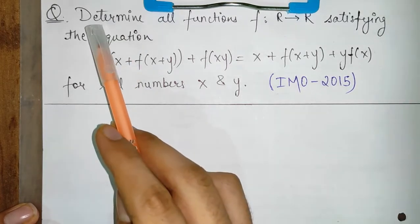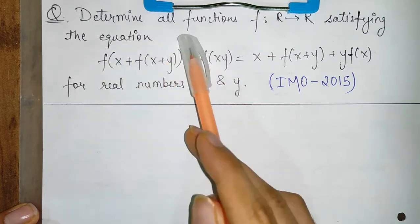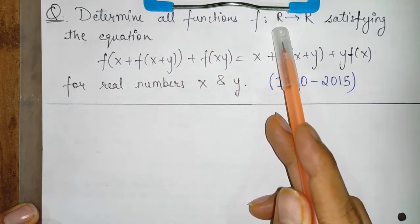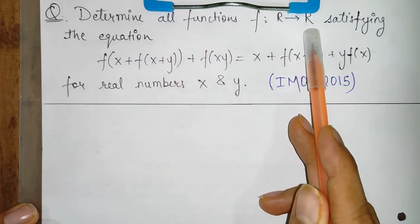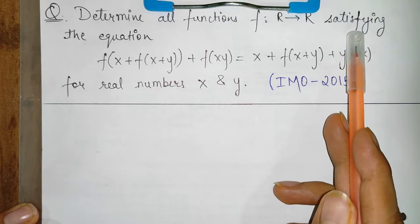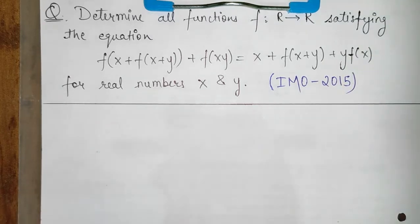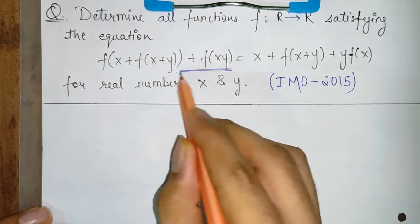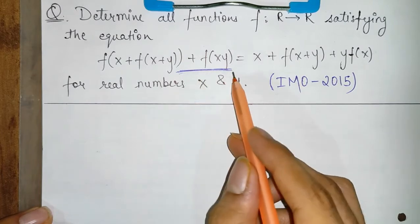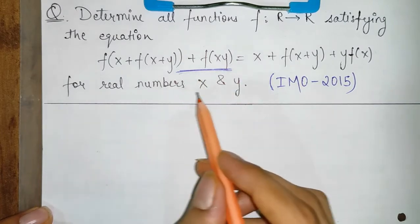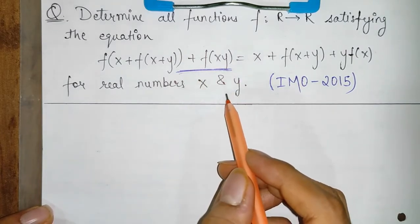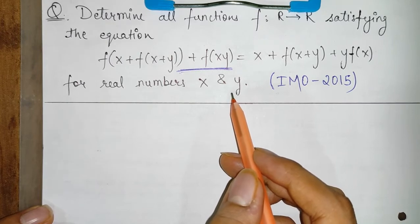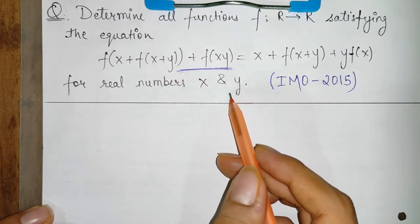The question states that we need to determine all functions f from the set of real numbers to the set of real numbers which satisfy the given equation. f satisfies this equation for all real numbers x and y. I request you to please pause the video and then attempt the solution.